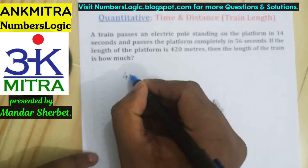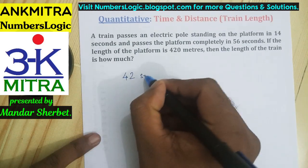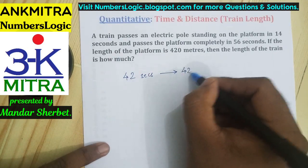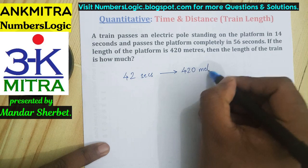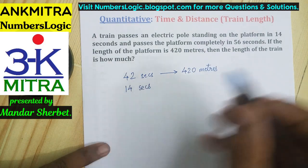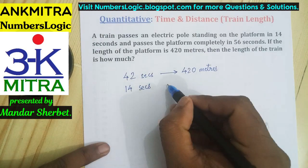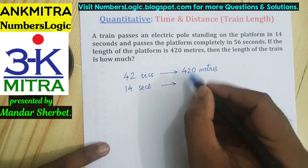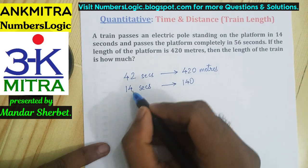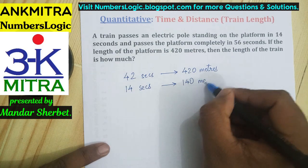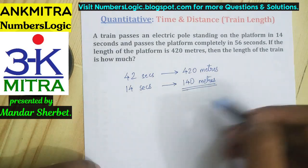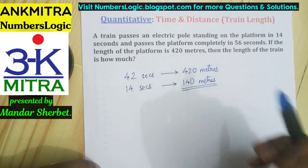42 seconds is the time required to cover 420 meters. Therefore, 14 seconds — the time required to cover the length of the train — will cover exactly 140 meters. Since 42 seconds covers 420 meters, 14 seconds covers one-third of that, which is 140 meters. So 140 meters is the length of the train. This is the logic required to be applied in this question.